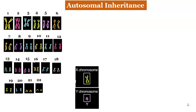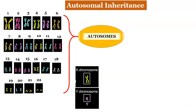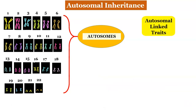There are 23 pairs of chromosomes found in the human somatic cell. Functionally, they can be divided as autosomes and sex chromosomes. The sex chromosomes are responsible for determination of sex, whereas autosomes contain genes which control the characters other than the sex of the individual. These characters are called autosomal linked traits. The genes controlling these characters when present on the autosomes are called autosomal linked traits, and their transmission from generation to generation is called autosomal inheritance. The genes responsible for the appearance of these traits may be dominant or recessive.